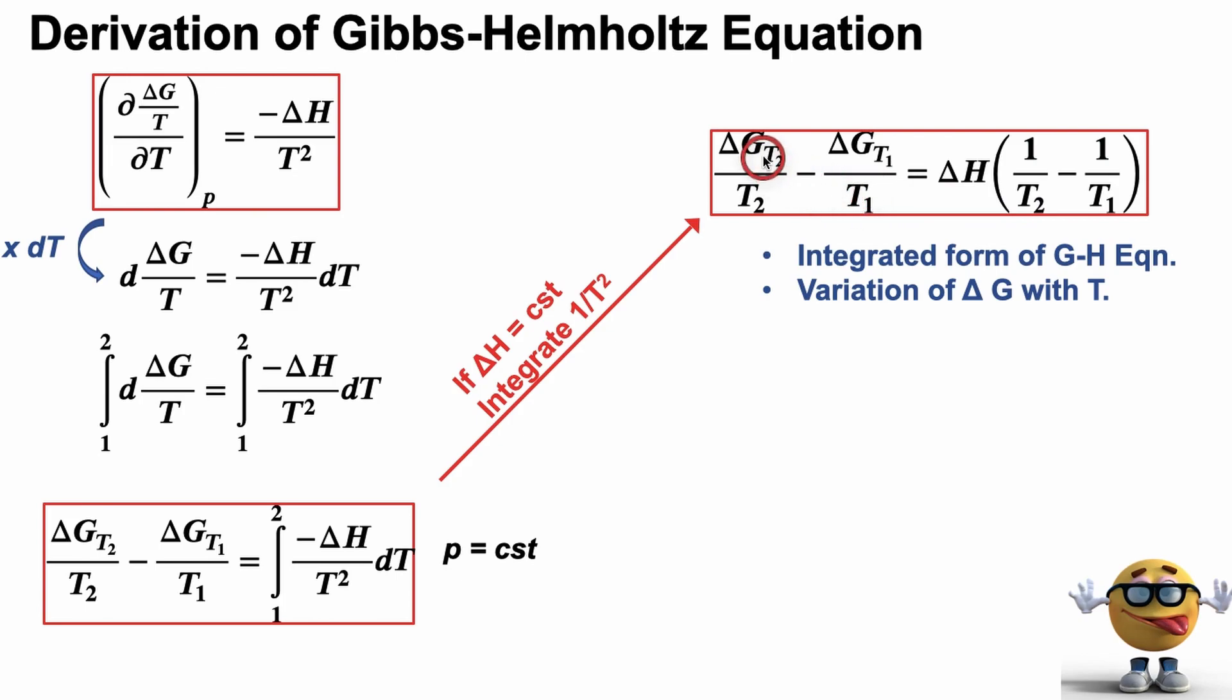This shows the variation of the change in Gibbs energy with temperature. So what's happening is the temperature is not changing during the process. So imagine we're doing the process once, like melting ice at 25 degrees Celsius. And then we'll melt it again at 80 degrees Celsius. Well, the change in Gibbs energy at 25 degrees Celsius compared to 80 degrees Celsius is going to be different. So we're doing the process at two different temperatures, and it compares what the change in Gibbs energy of one temperature is to another change in Gibbs energy.